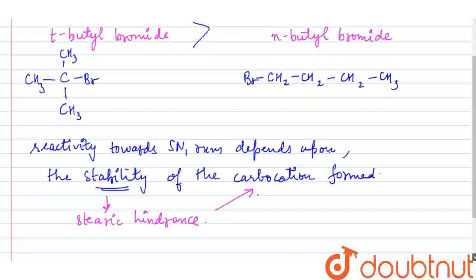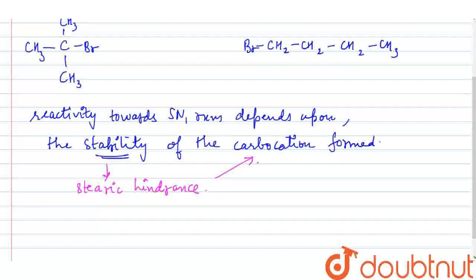So, if we draw the carbocation for these two compounds, first I am drawing for the tertiary butyl bromide. The carbocation for this will be CH3C positive. This is a carbocation. We can see there are three alkyl groups attached to this carbon.